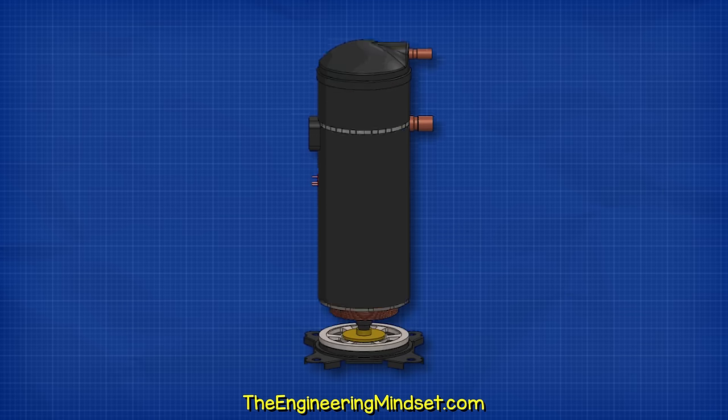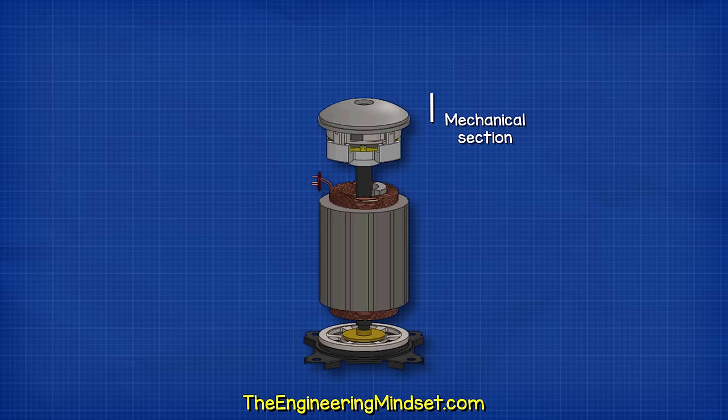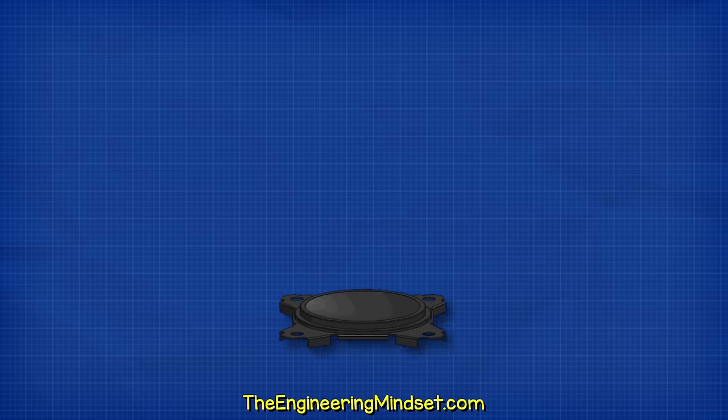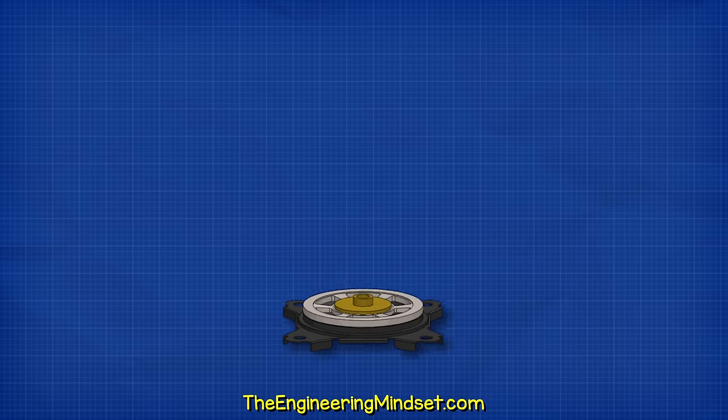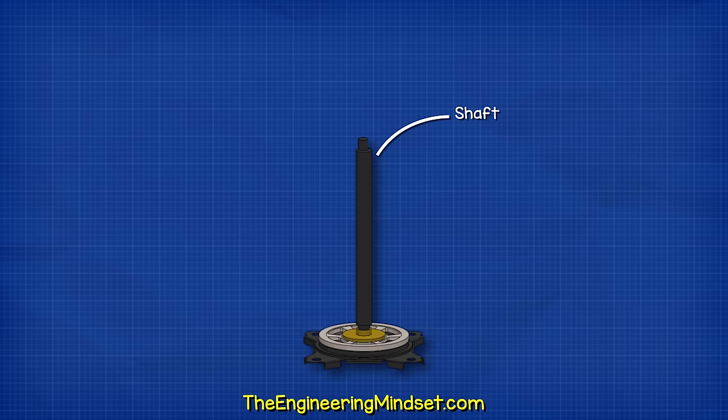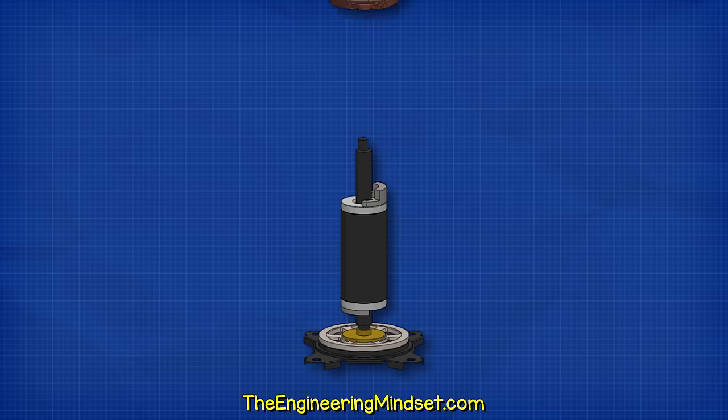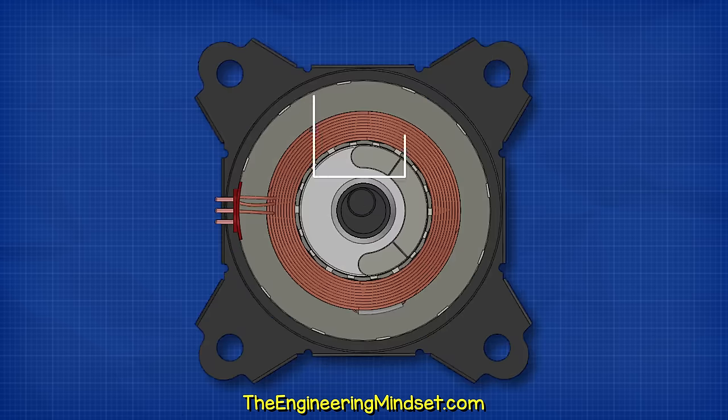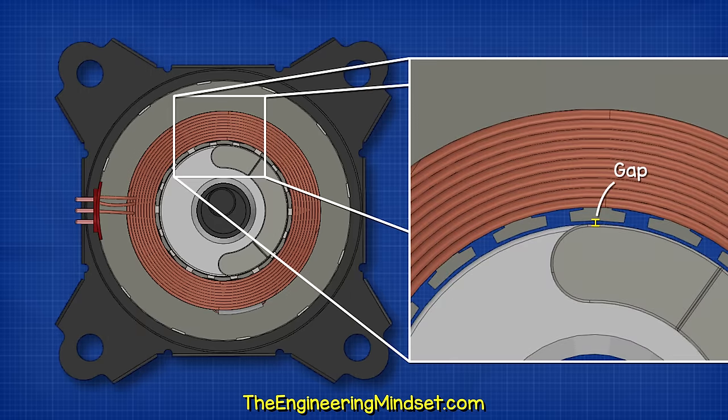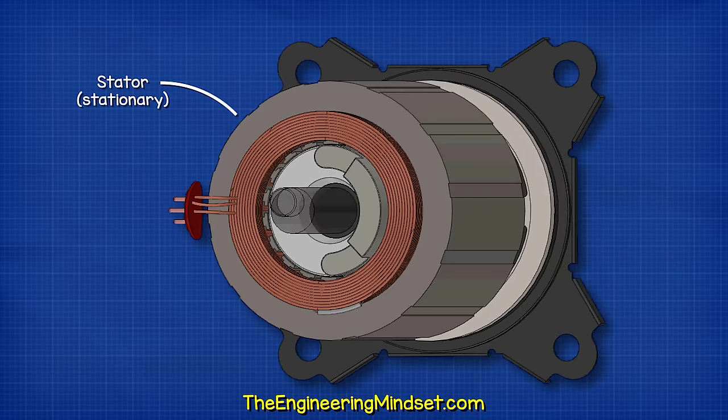When we remove the shell, we see there is a mechanical section and an electrical section. At the bottom, we usually find some type of support with a bearing built into this. The shaft will sit within this bearing and rises up through the compressor. Connected to the shaft is the rotor. Surrounding the rotor is the motor stator. There is a small gap between the stator and the rotor. The stator remains stationary, but the rotor rotates.